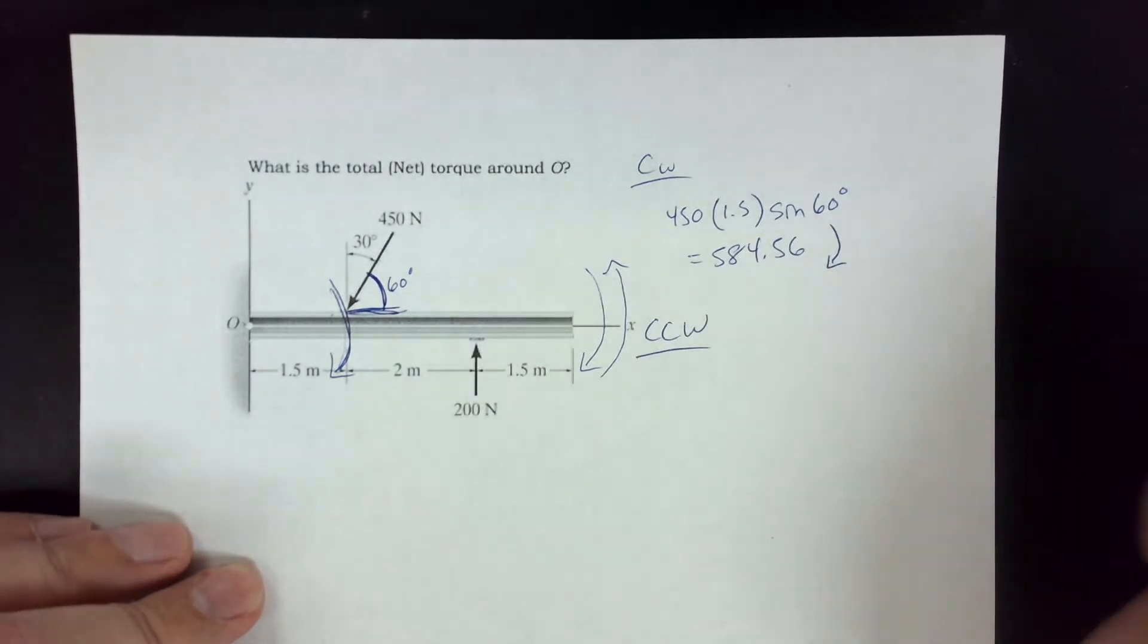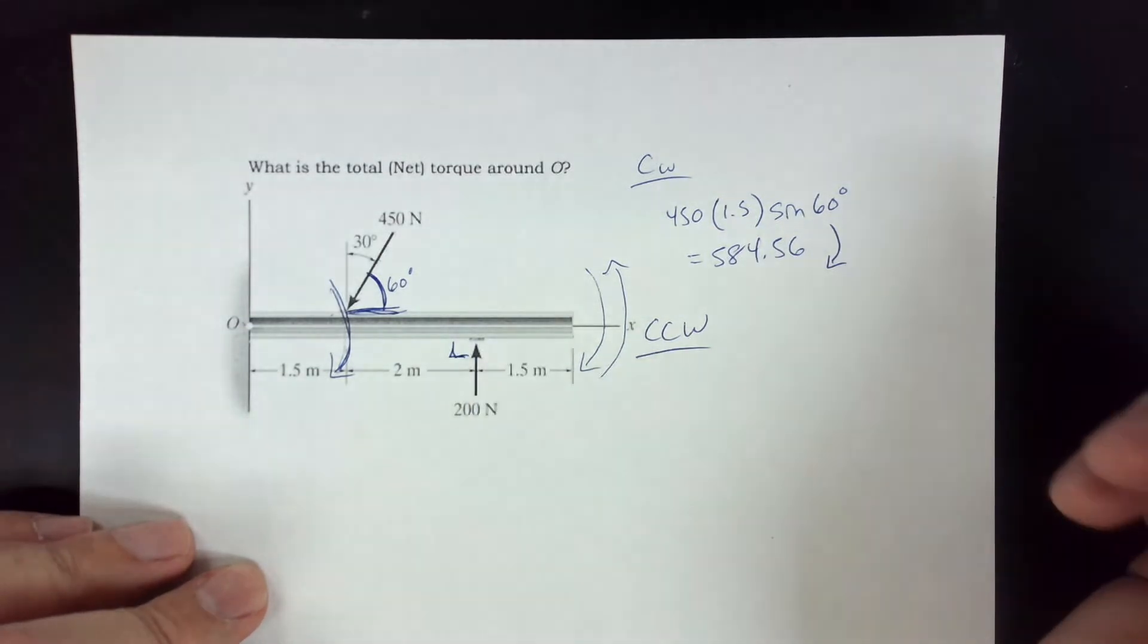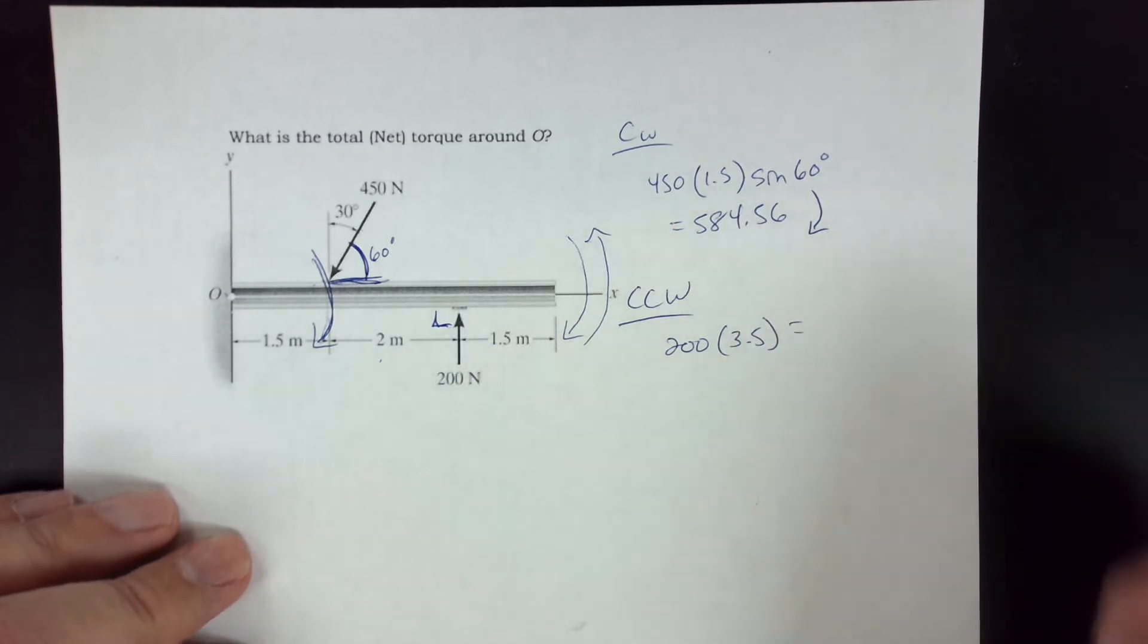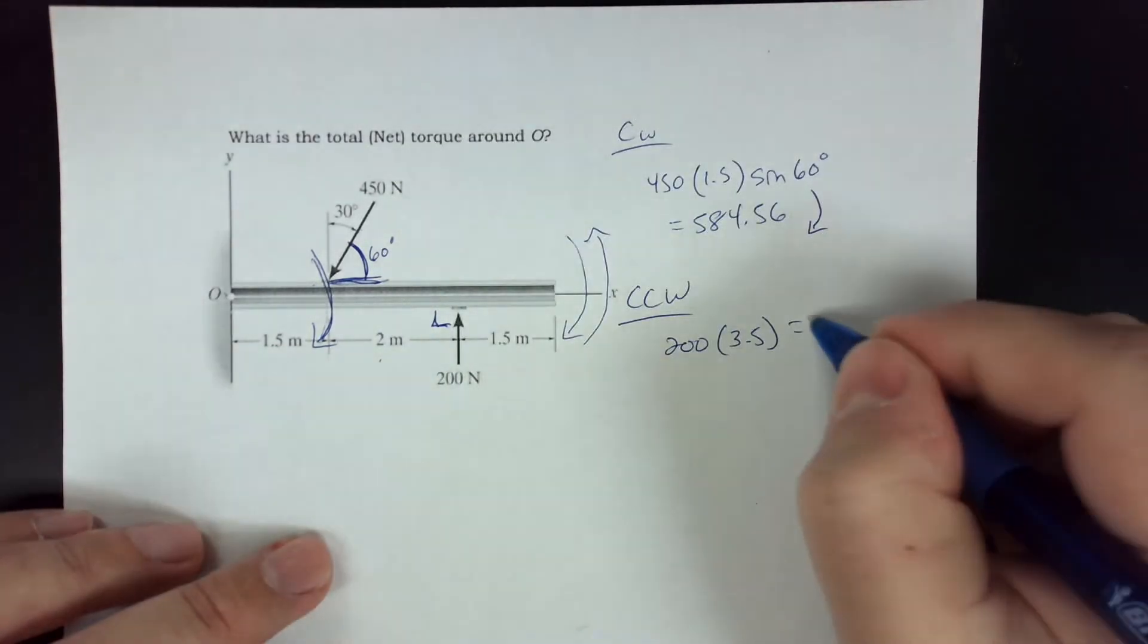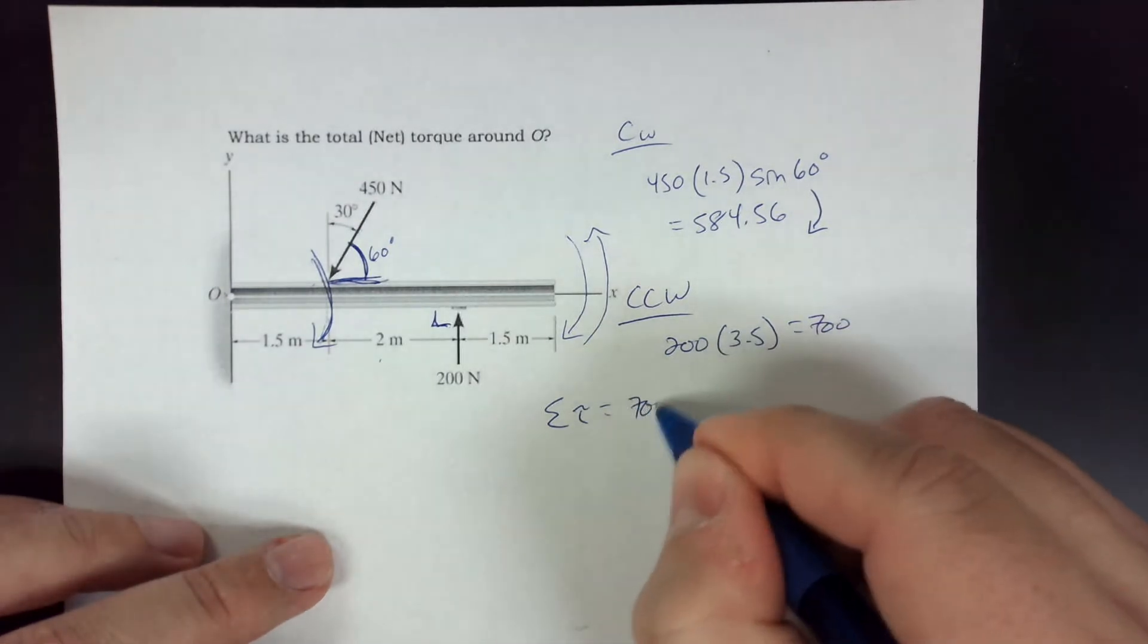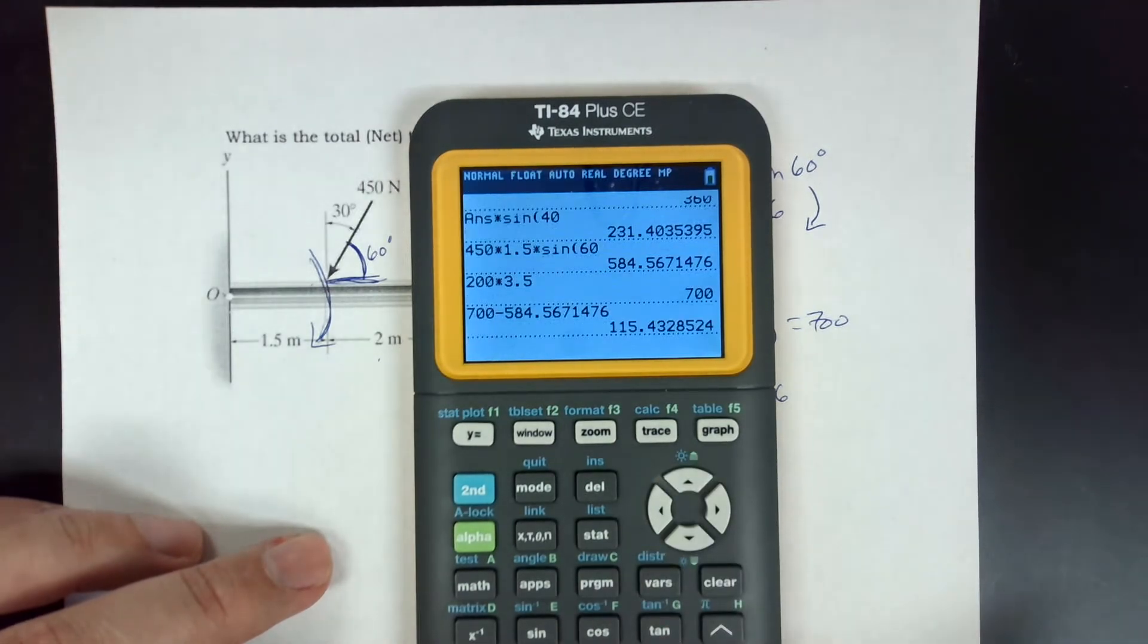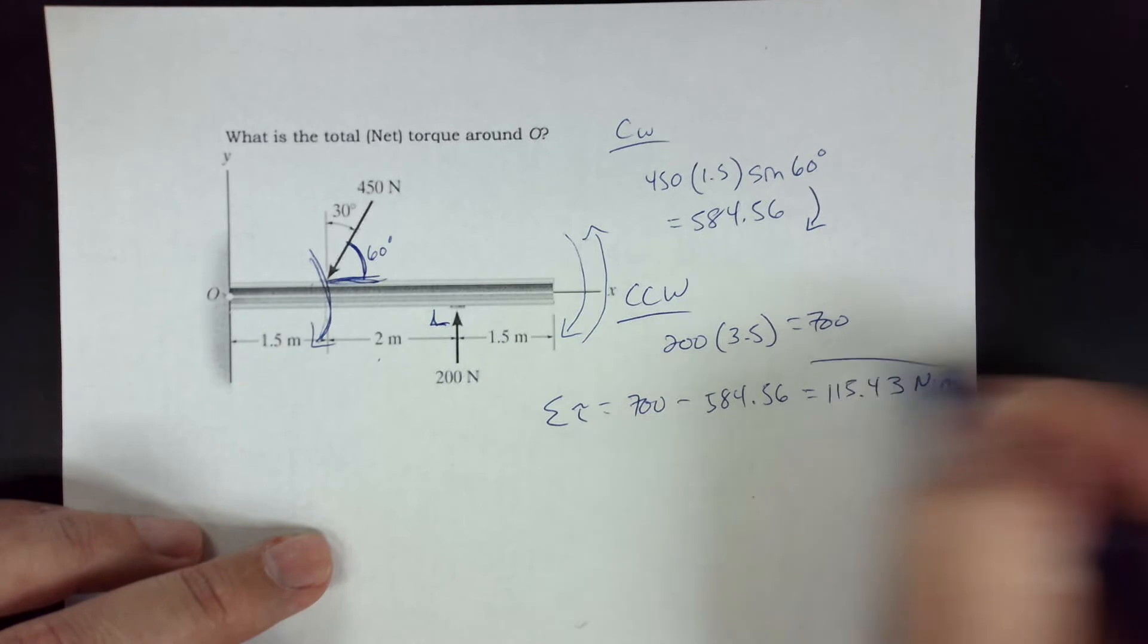So there's that much turning this clockwise. Now let's do counterclockwise. There's only one, so this is easy. So I can just take the two and subtract. This one is doing 90 degrees, 90 degrees from R. So I don't need to use sine. So I'll just say it's F times R. So that's 200 times R. That's two meters plus one and a half. So that's three and a half meters. So 200 times three and a half, 700. So the net torque is going to be 700 minus 584.56. And when you do that, you get 115.43. So that's my net torque in this case.